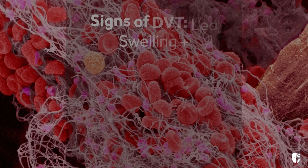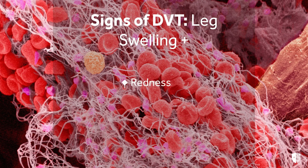The most common signs of DVT are leg swelling in conjunction with redness, pain, and tenderness. All of these things together collectively increase the suspicion that you do have a DVT.